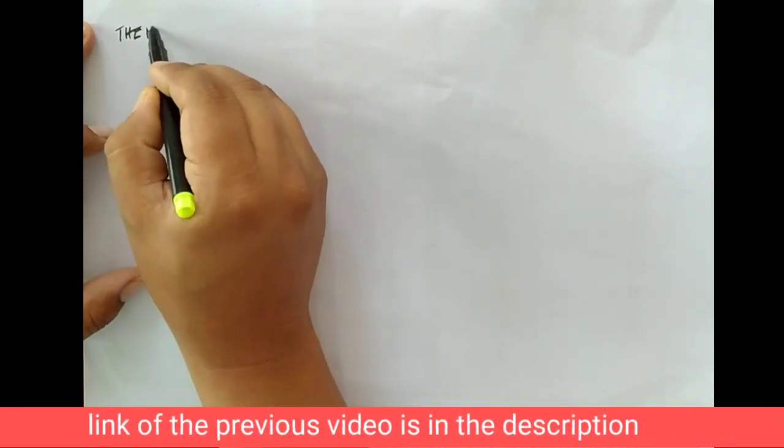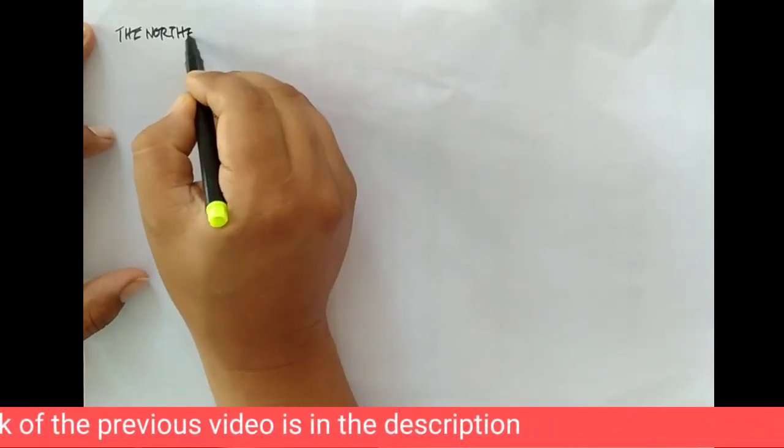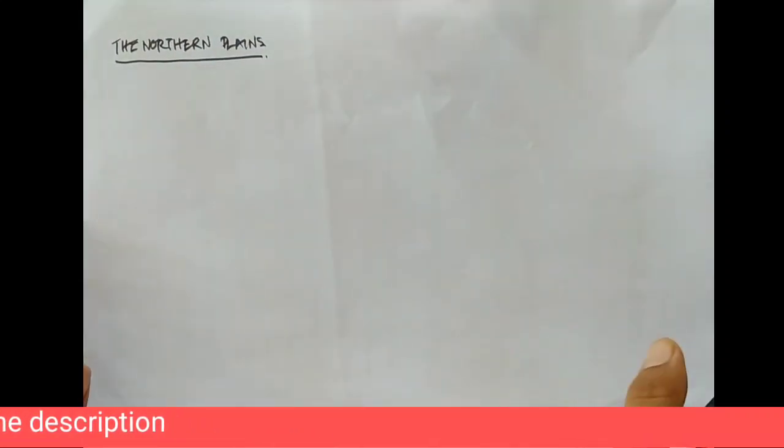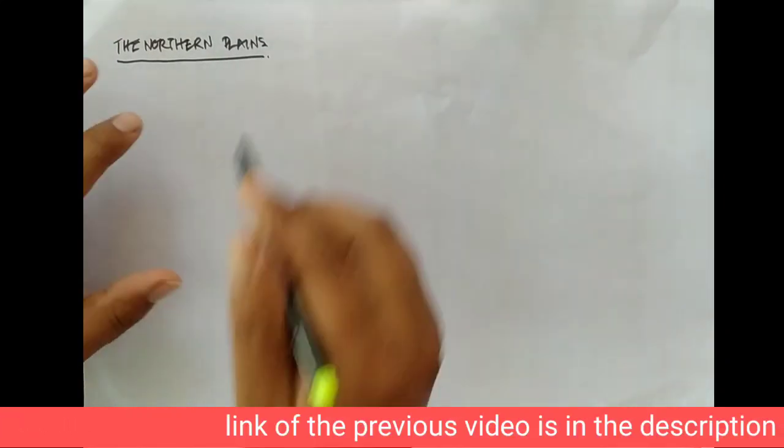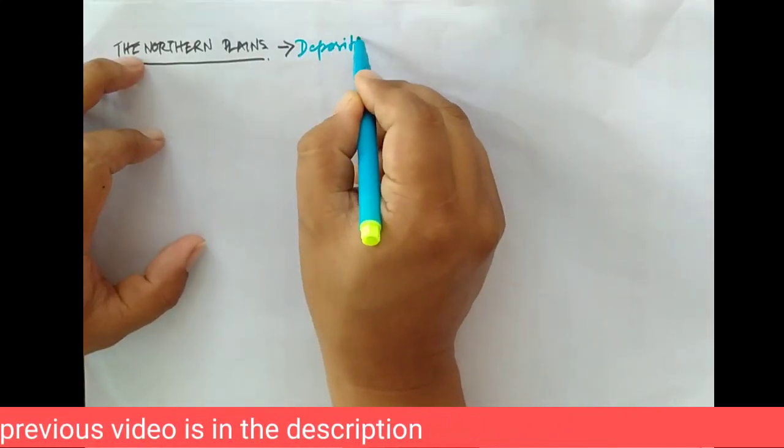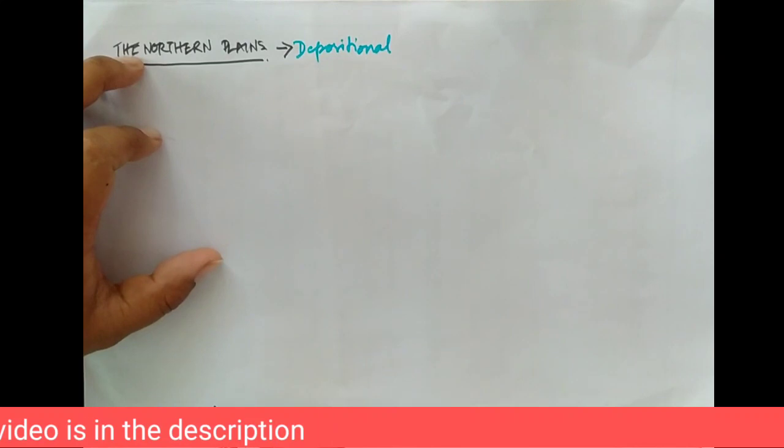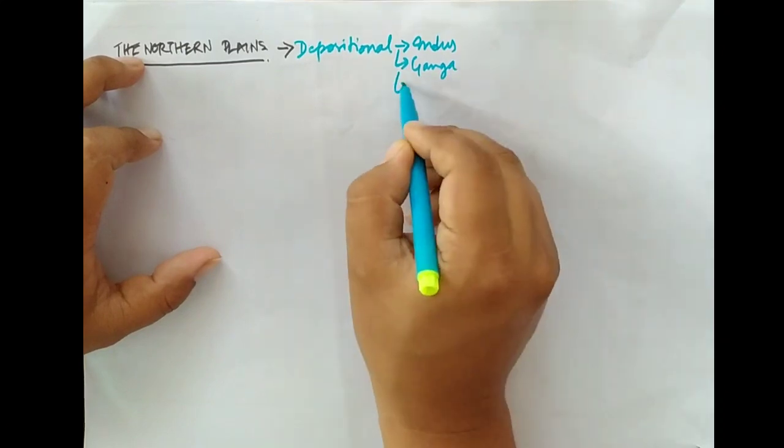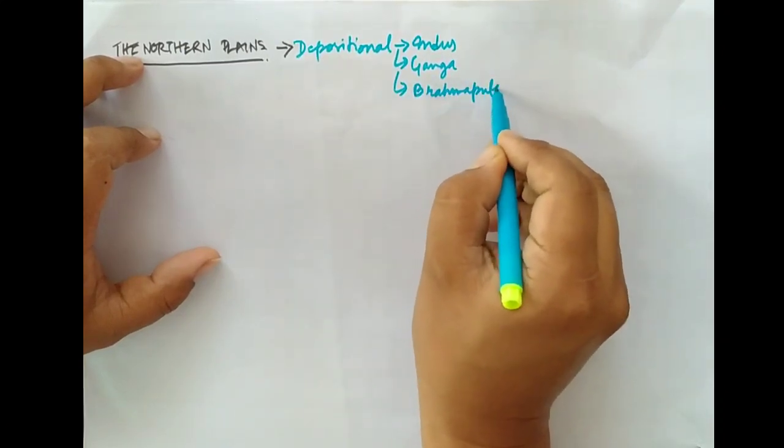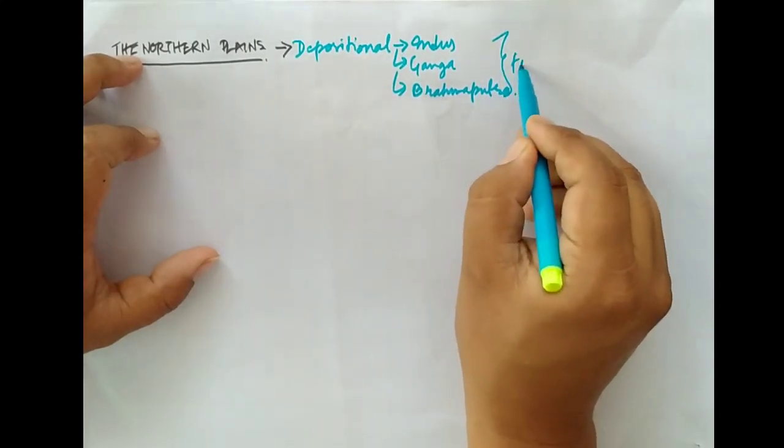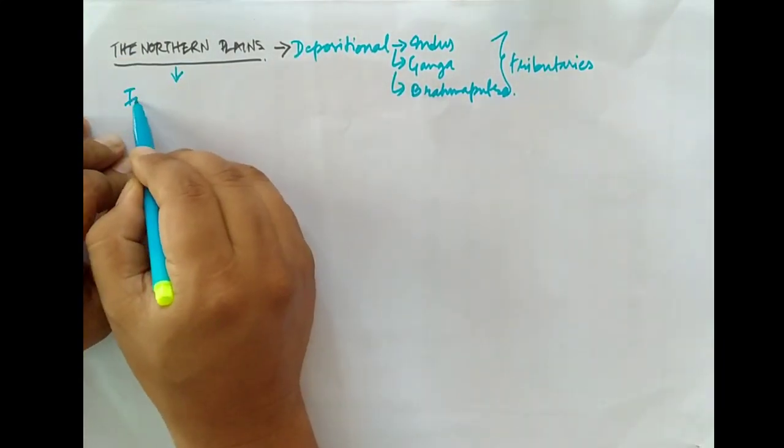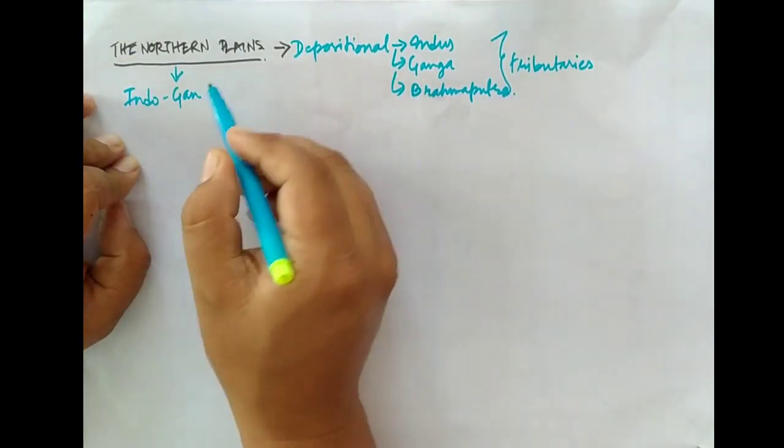Hello students, in the previous video we discussed the northern mountains. Today we are going to discuss the other remaining relief features of our country. First, the northern plains, the second most important physiographic division. The northern plains is a depositional feature formed by sediments brought down by the rivers Indus, Ganga, and Brahmaputra along with their tributaries. Hence, it is also termed as Indo-Ganga-Brahmaputra plain.